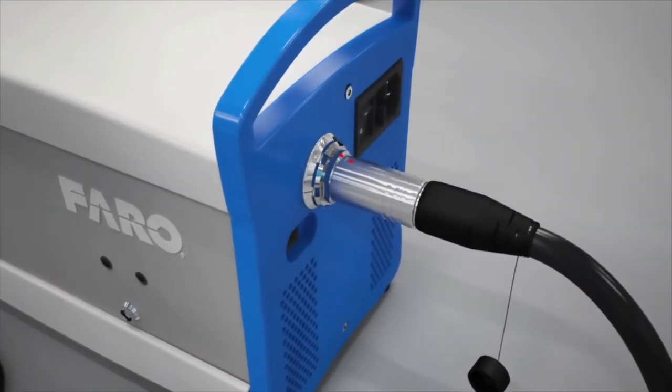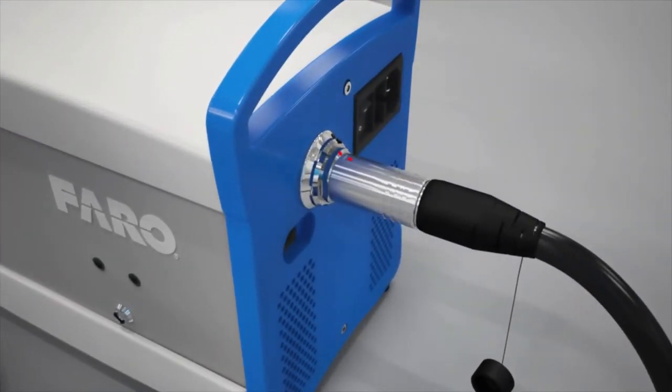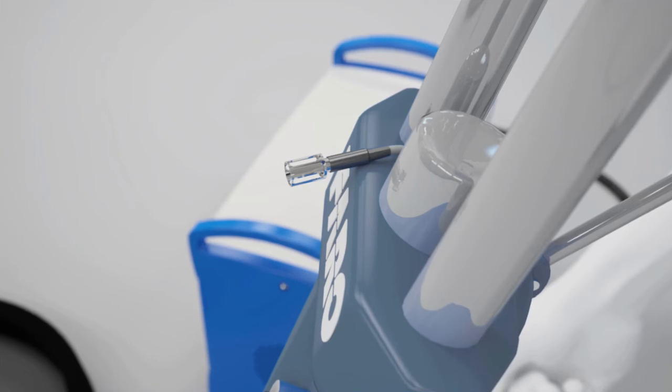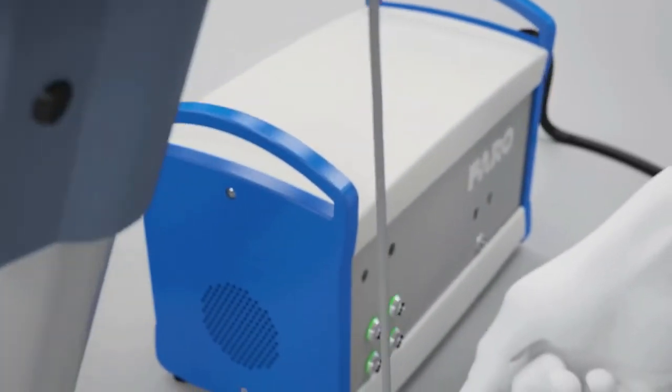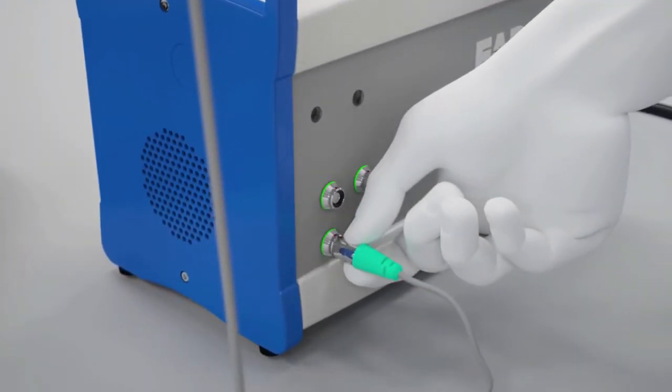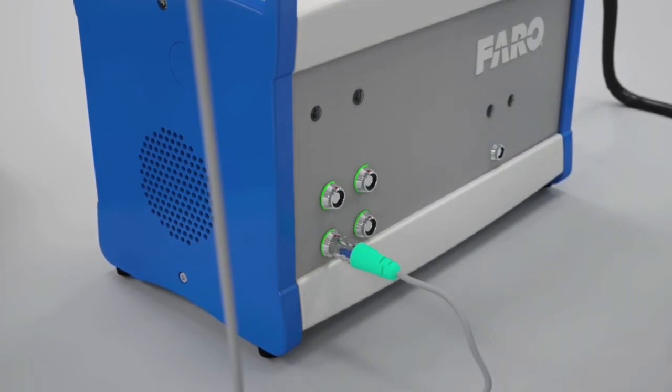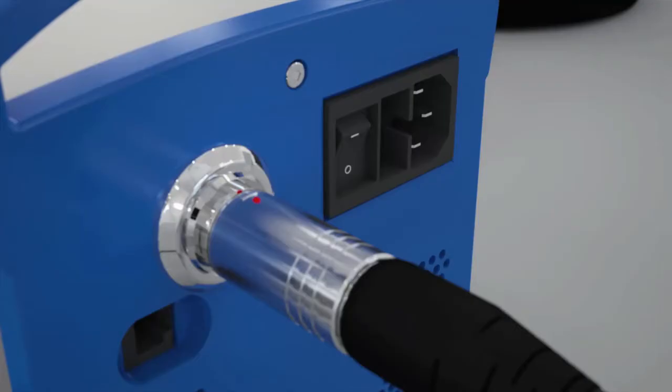Again, make sure to pull back the threaded metal ring on the cable and match up the red marks. Now connect the temperature sensor cable to a free port on the MCU. There are red marks here too to help you correctly attach the cable.